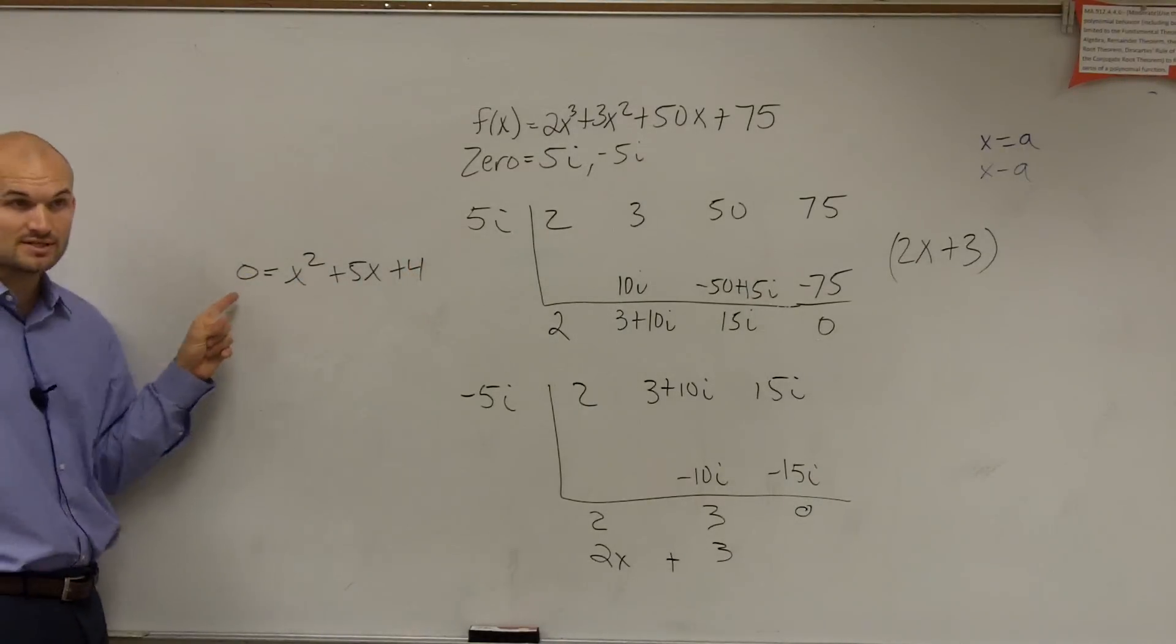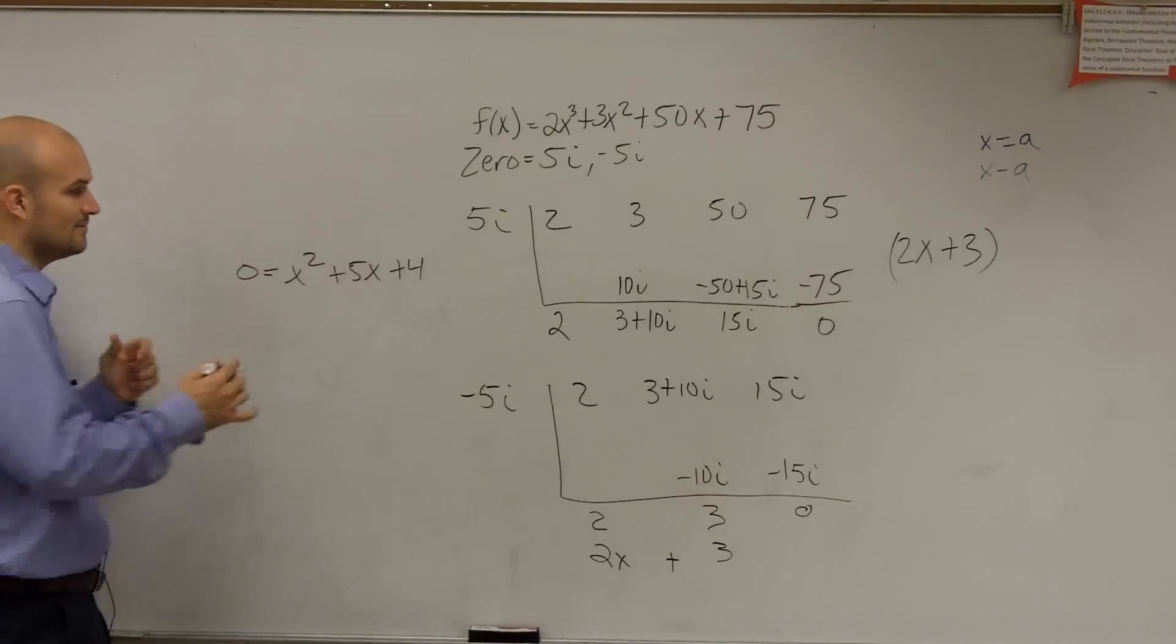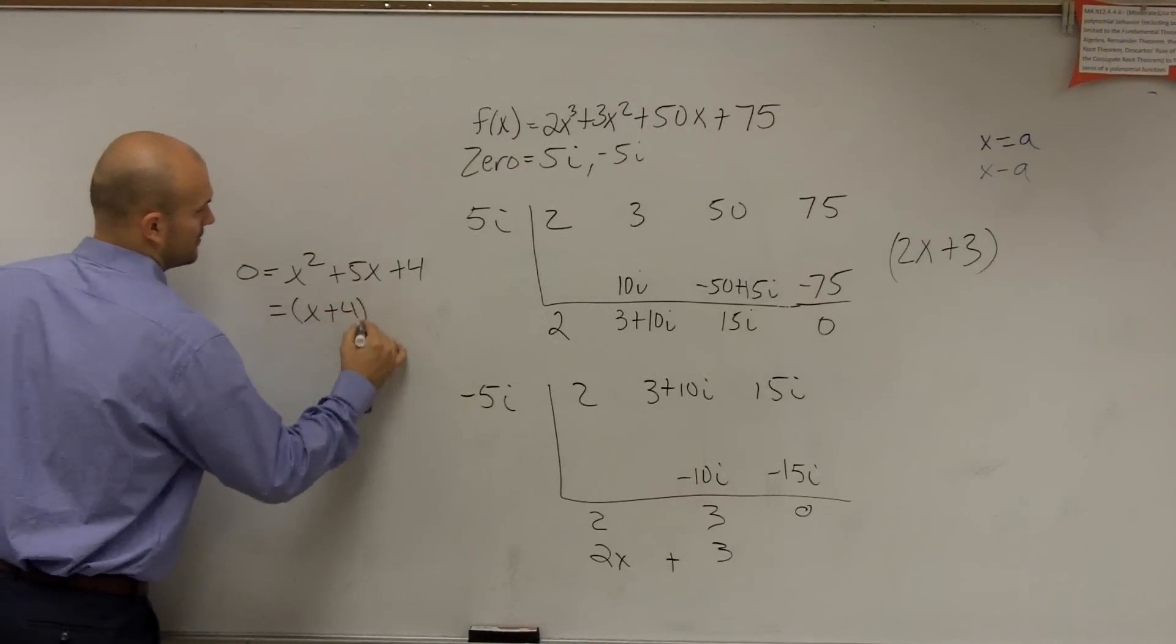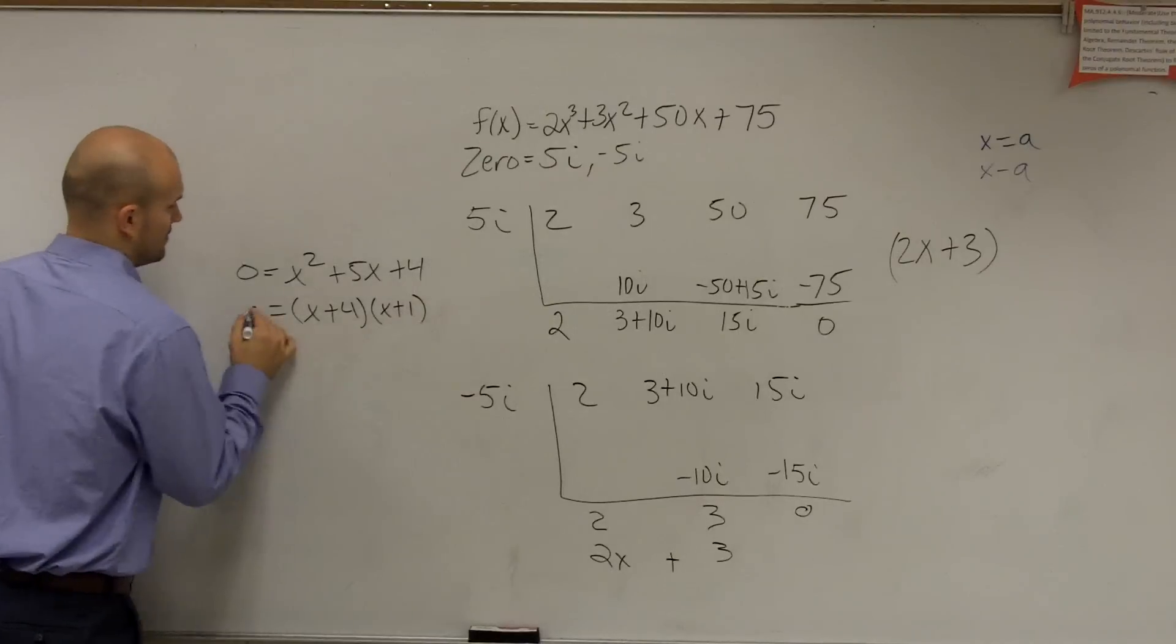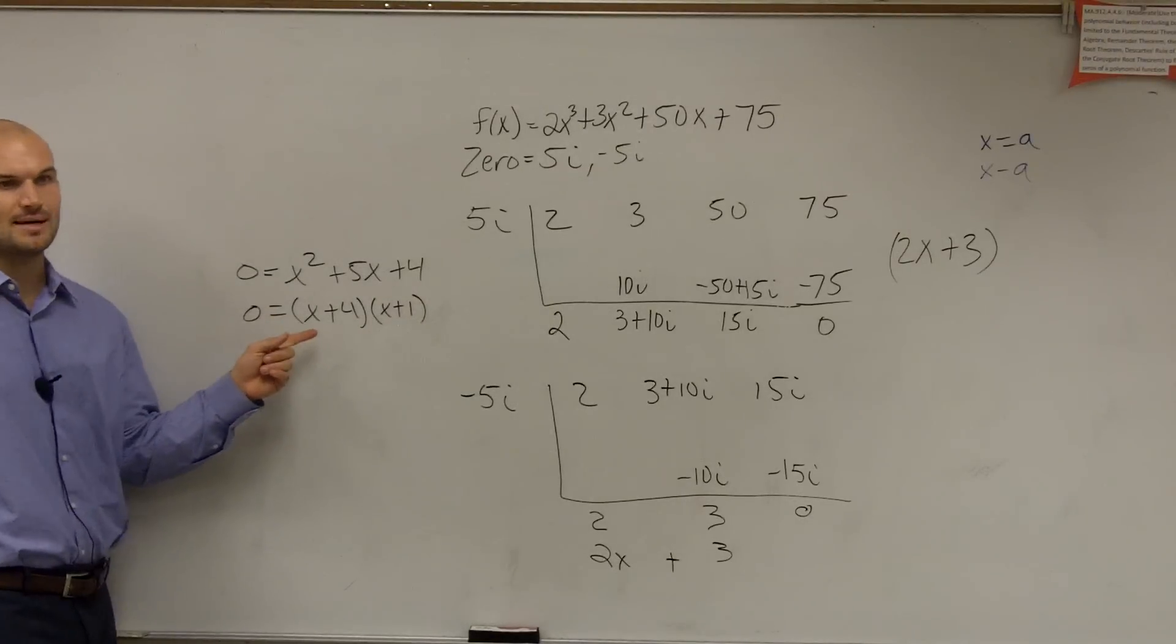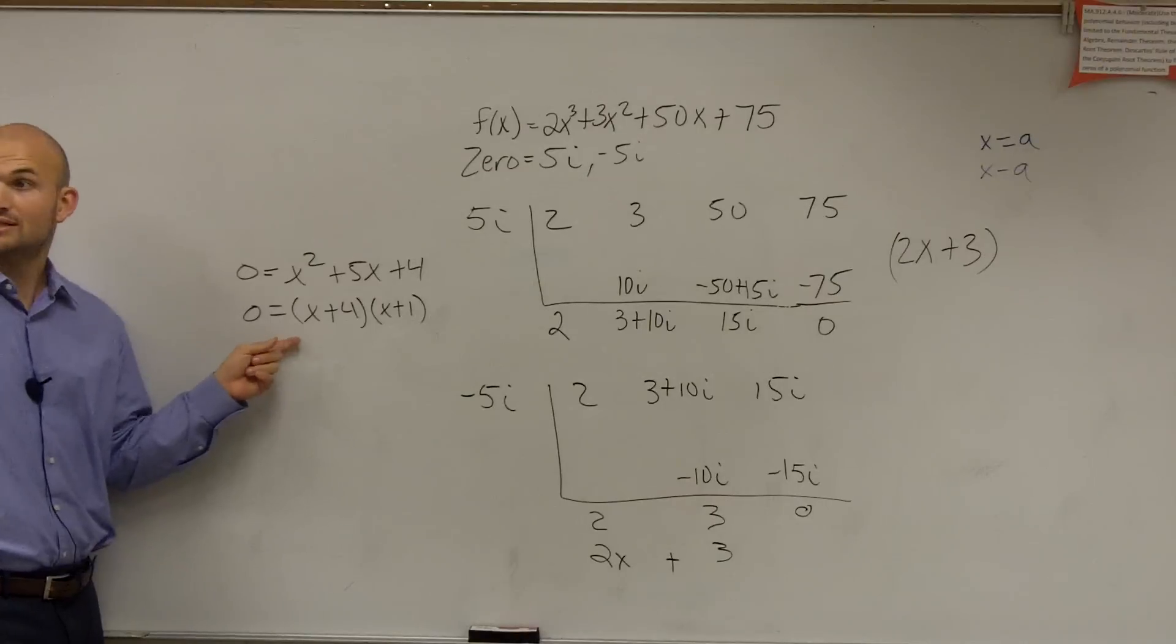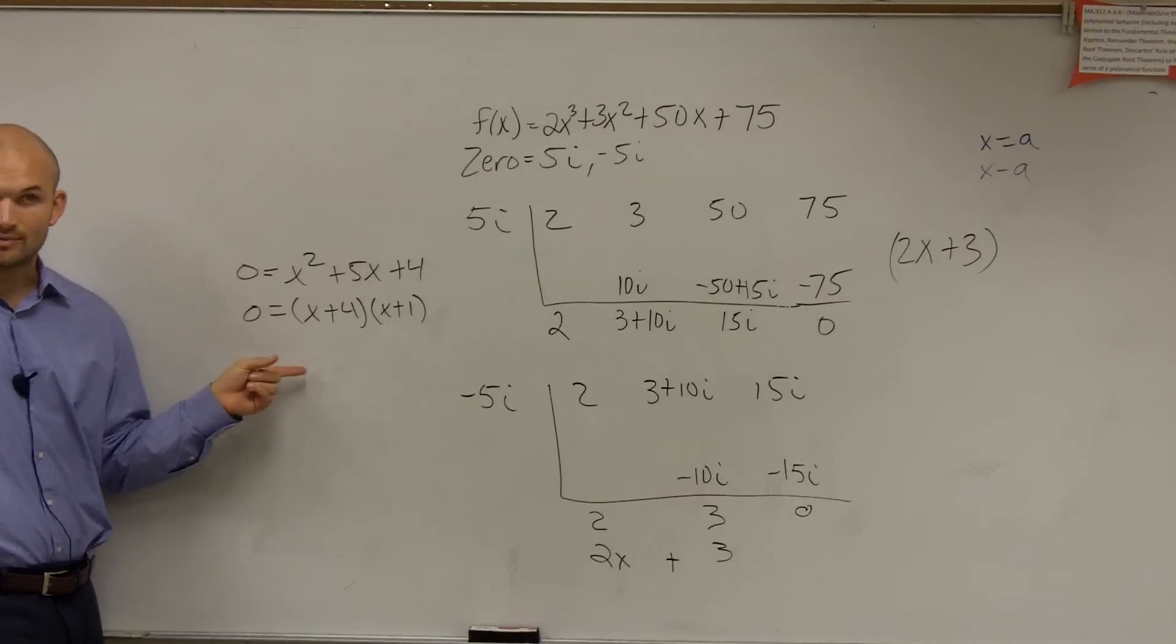The first thing you have to do is set it equal to 0, right? You always set your polynomial equal to 0. That was the first thing we did. Then you factored it. Then what do you do? From here, what's the next step? Set them both equal to 0, right? Because of the 0 product property.